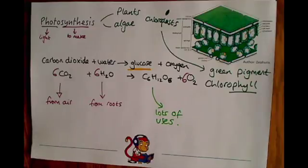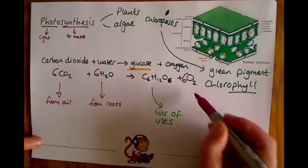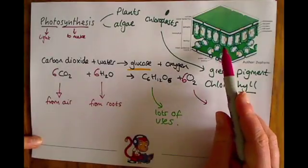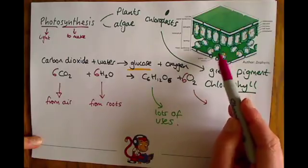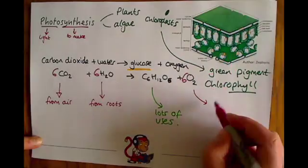Oxygen, of course, will then be released out of the plant. So out of that stomata, the oxygen will diffuse from a high concentration in the leaf to the lower concentration outside.